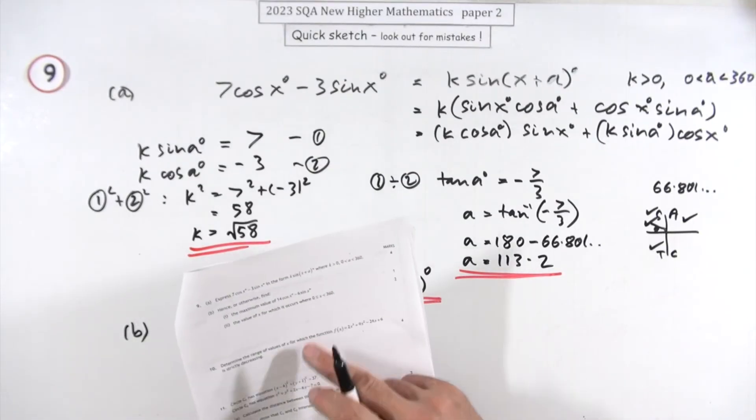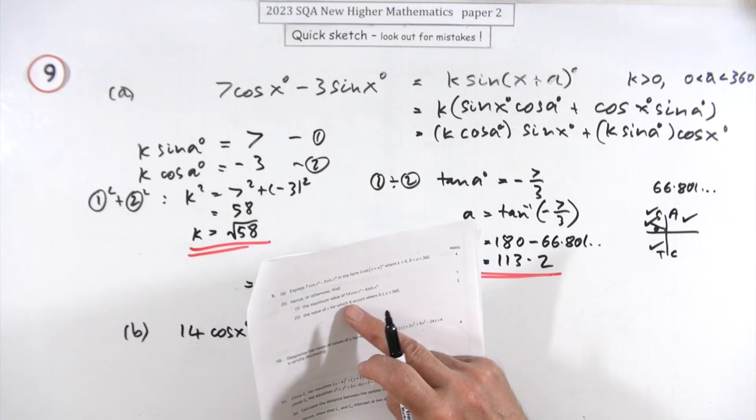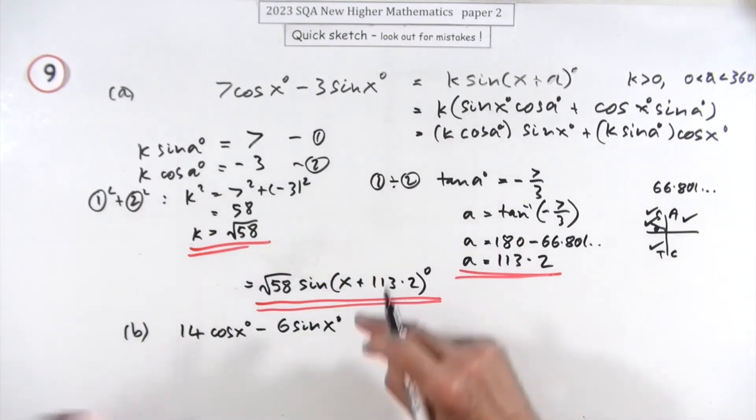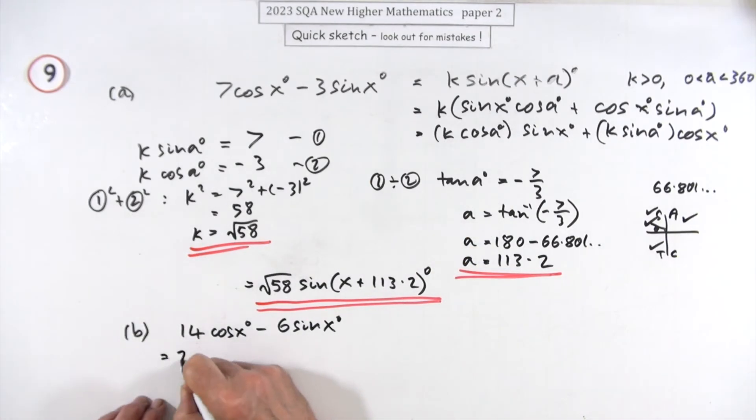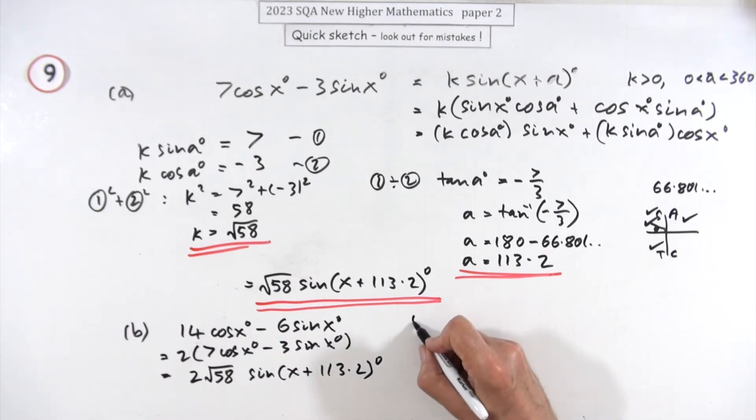Second part says hence or otherwise find the maximum value of this. So it must be related to that. It's double it, so that's going to be 2 times 7cos²x - 3sin²x, which is what you've just done. So it's going to be 2 times this, it's going to be 2 times root 58 sin(x + 113.2).